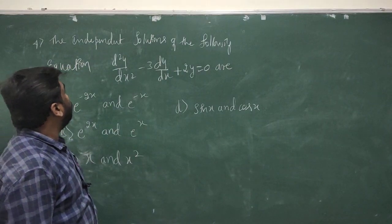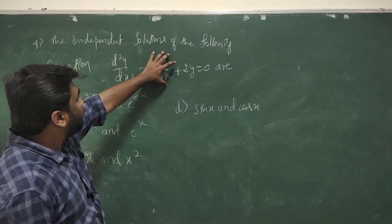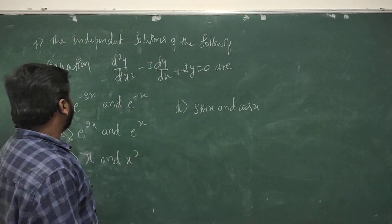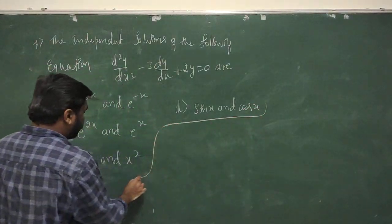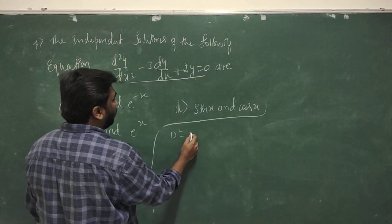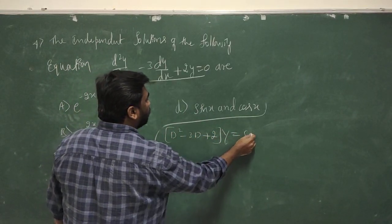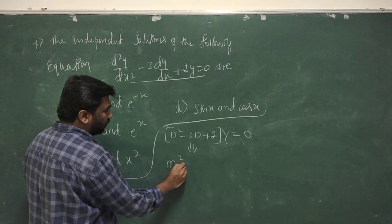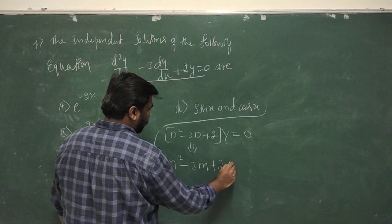This is question number 4, based on differential equations. We need to calculate the solution for this differential equation, which can be written in the form d²y/dx² minus 3 dy/dx plus 2y equals 0, or using operator notation: (D² minus 3D plus 2)y equals 0. Writing the auxiliary equation: m² minus 3m plus 2 equals 0.